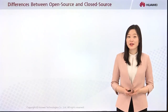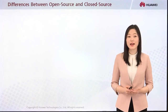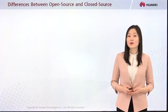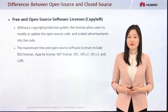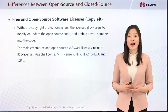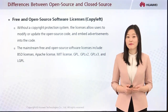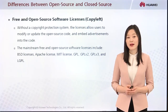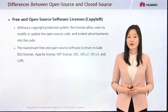Let's start out with differences between free and open source software licenses and the proprietary software licenses. Free and open source software licenses, also called copyleft licenses, allow users to modify or update the open source code. The mainstream free and open source software licenses include BSD licenses, Apache licenses, MIT licenses, GPL, GPLv2, GPLv3, and LGPL.